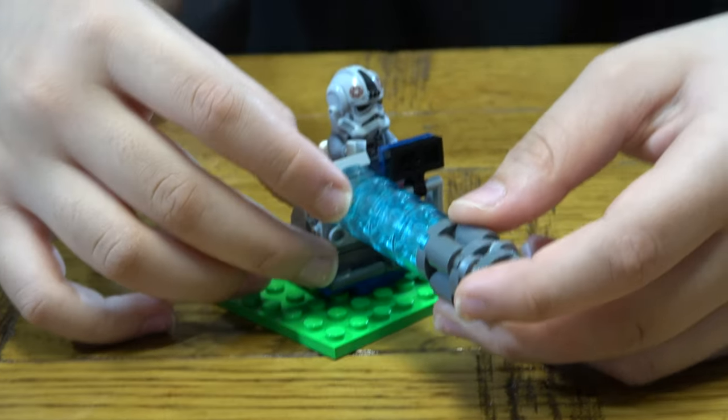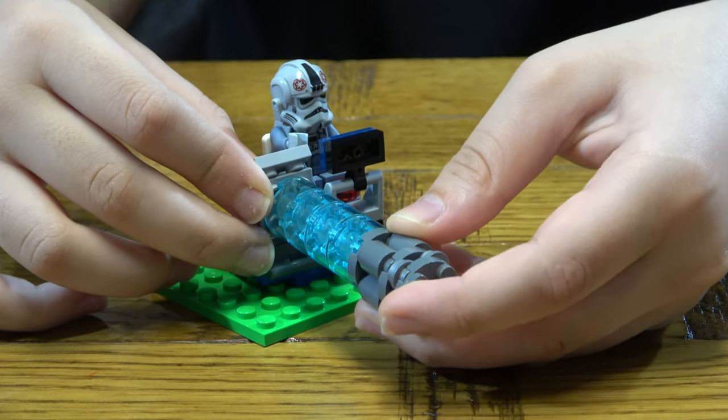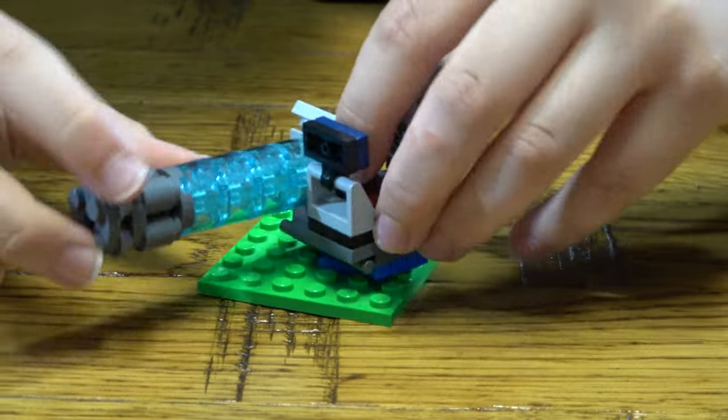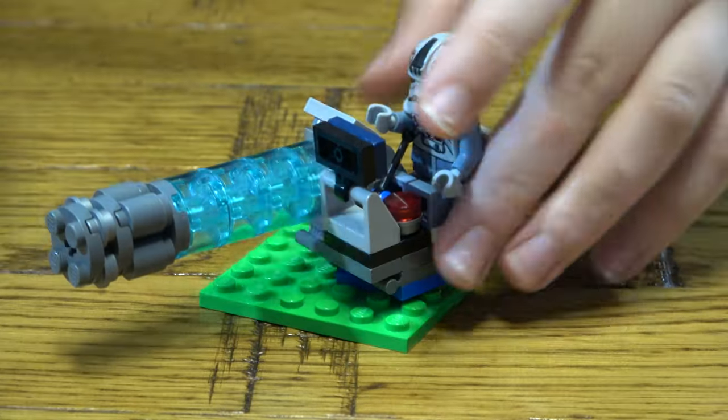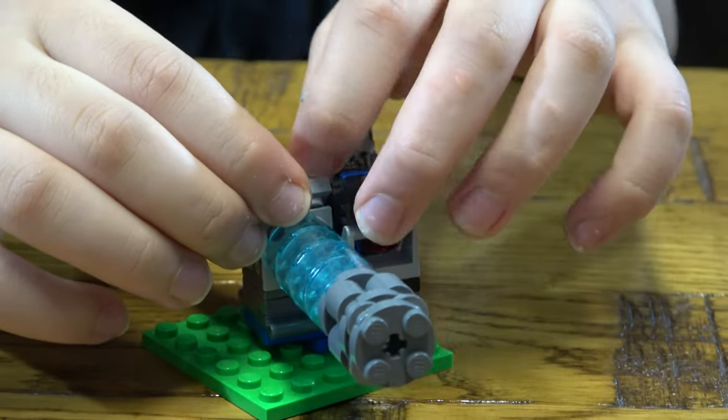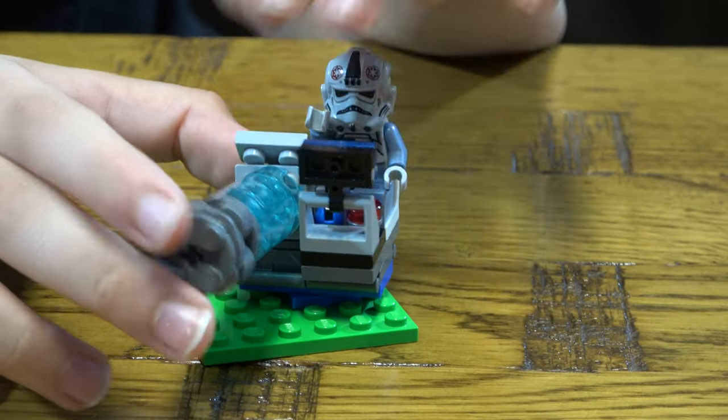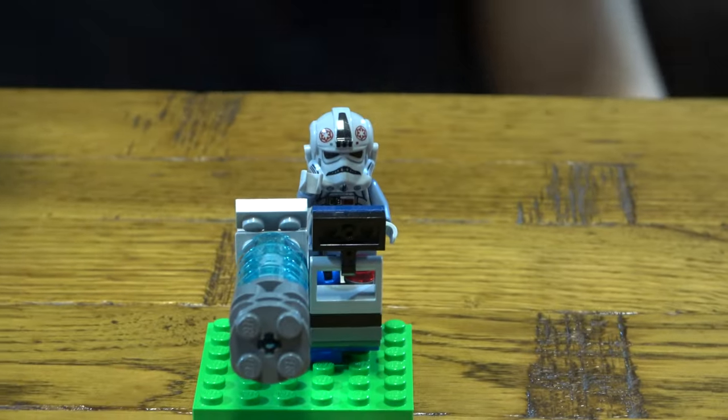Then if you want to aim it upwards, you pull this here, and put that there. There we go. That is our little machine gun.